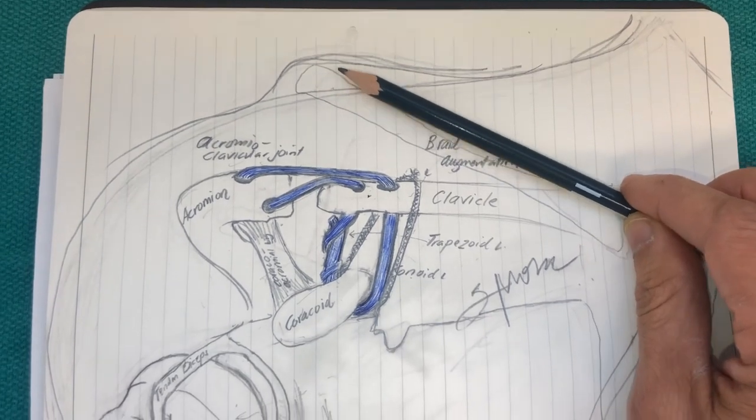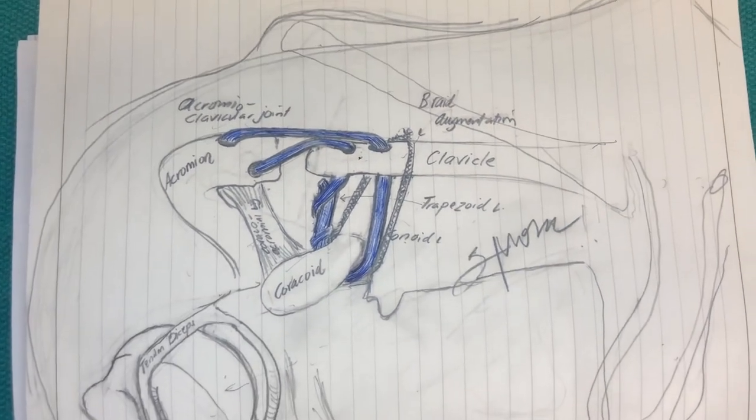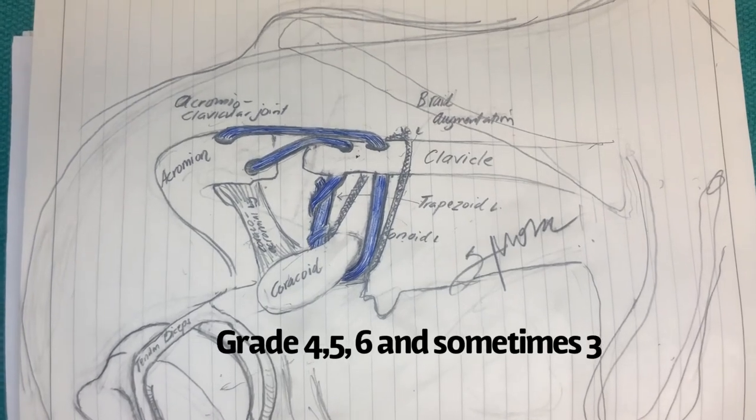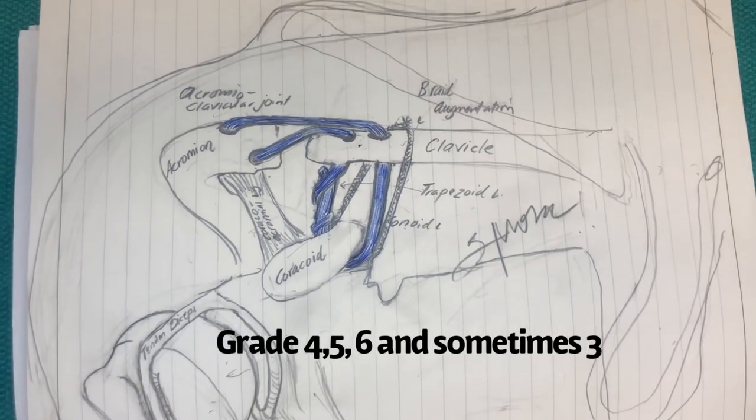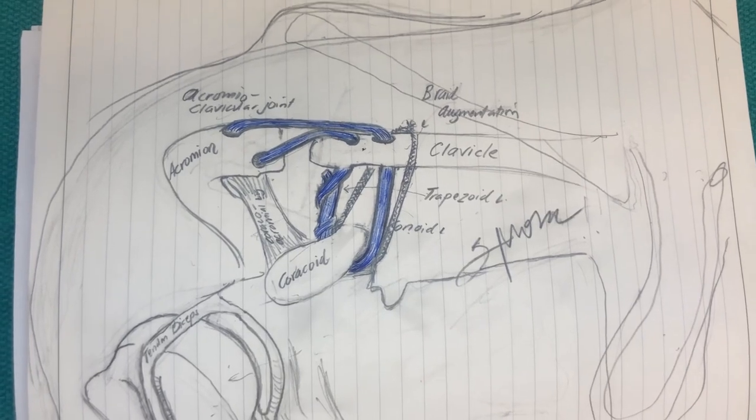So what do we do in some cases of a high-grade separation such as a grade 5? Well this is one of the many ways to reconstruct it. I do what's called an anatomic reconstruction.